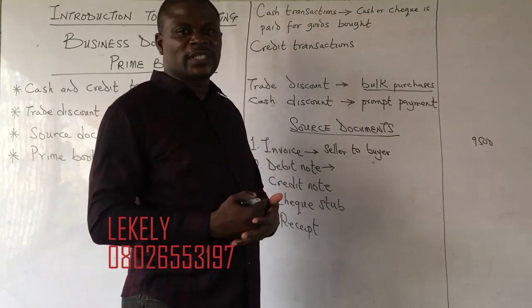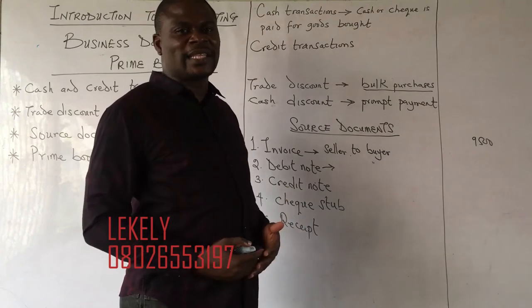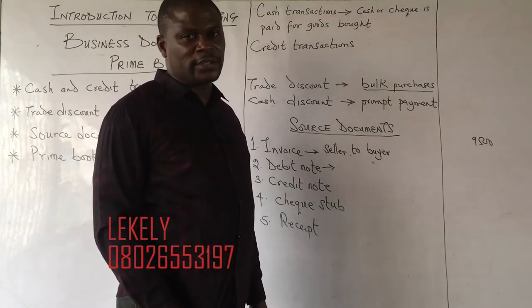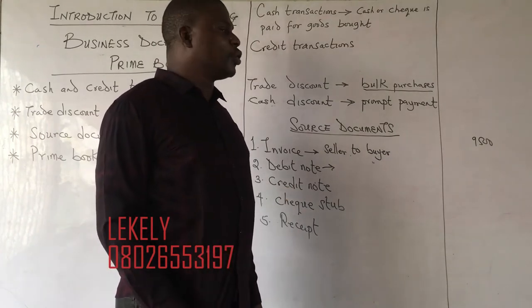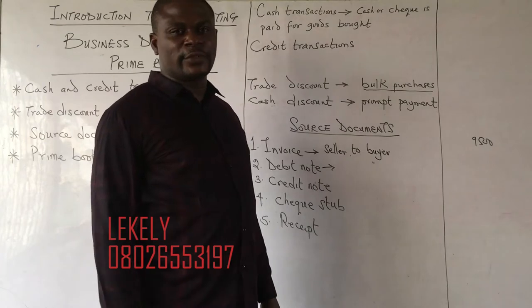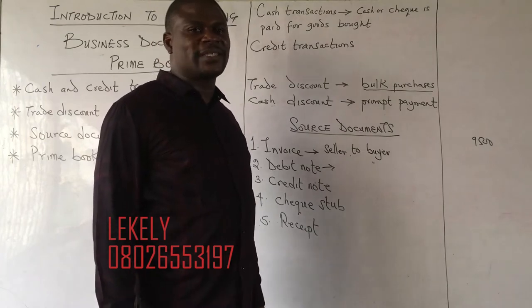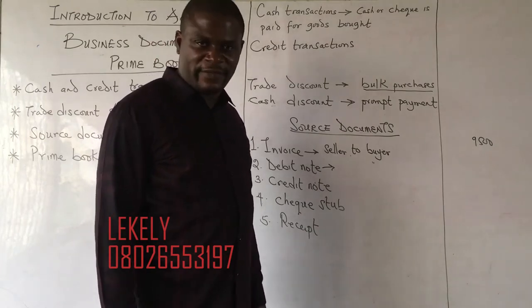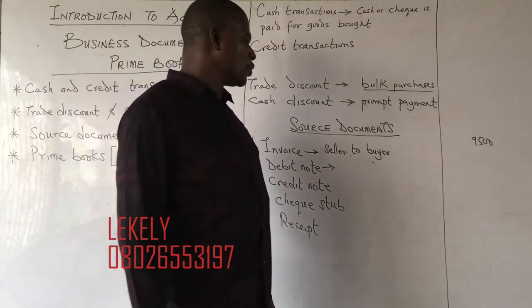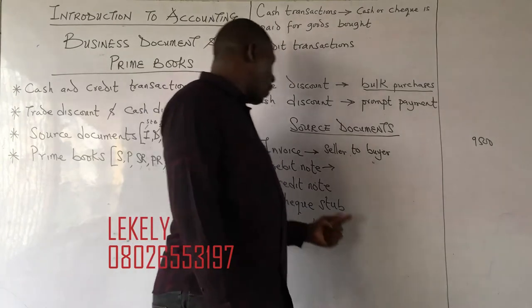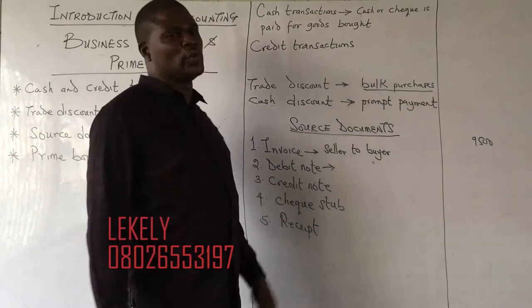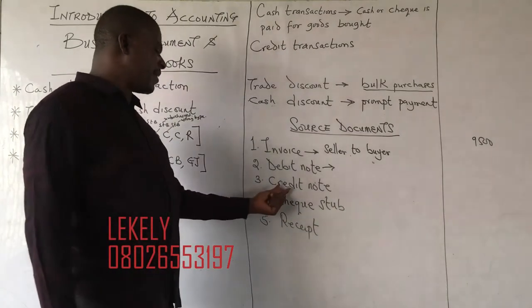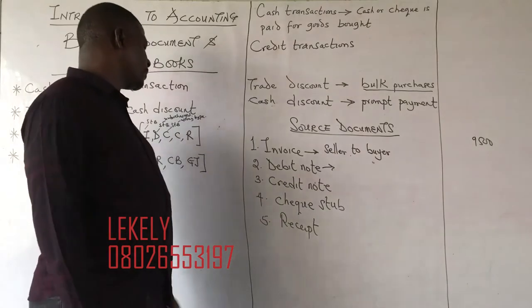The note that shows the buyer that the total goods sent were worth 10,000 and not 9,500 — correcting that undercharge — is what we call a debit note.